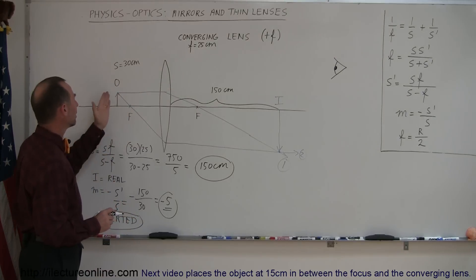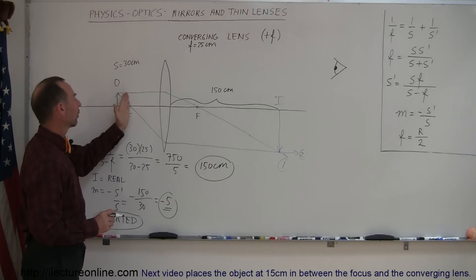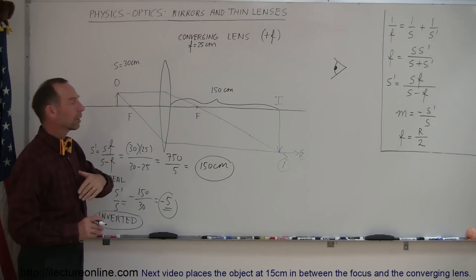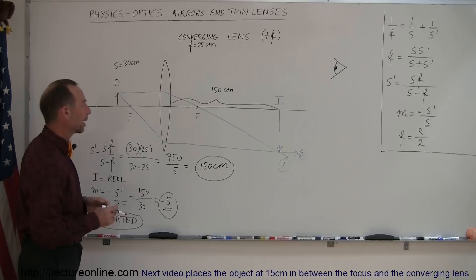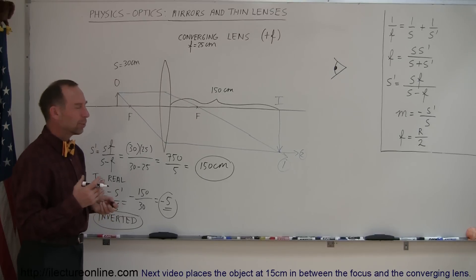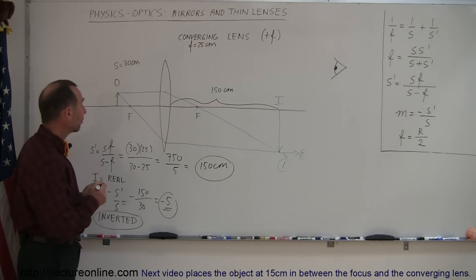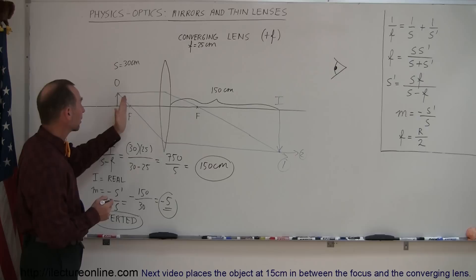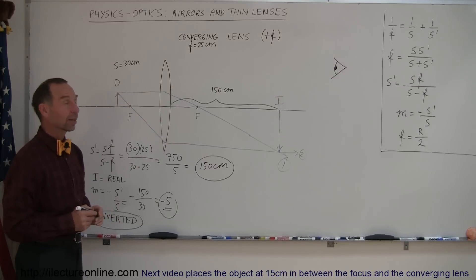What will happen when the object goes to the focal point itself? Well, then the image will become infinitely far away, infinitely large, and of course you're not going to see really anything like that. What happens then when you continue with the object and place it inside the focal point of the lens? That will be our next video, so stay tuned for that one.